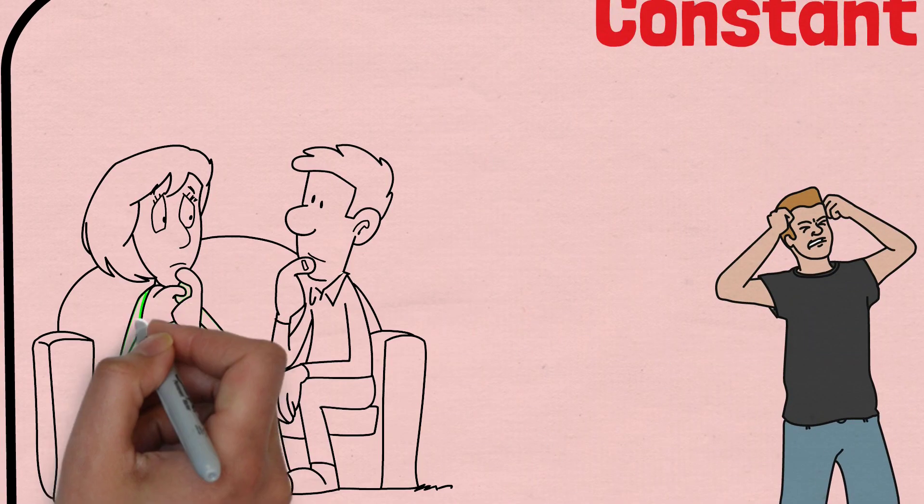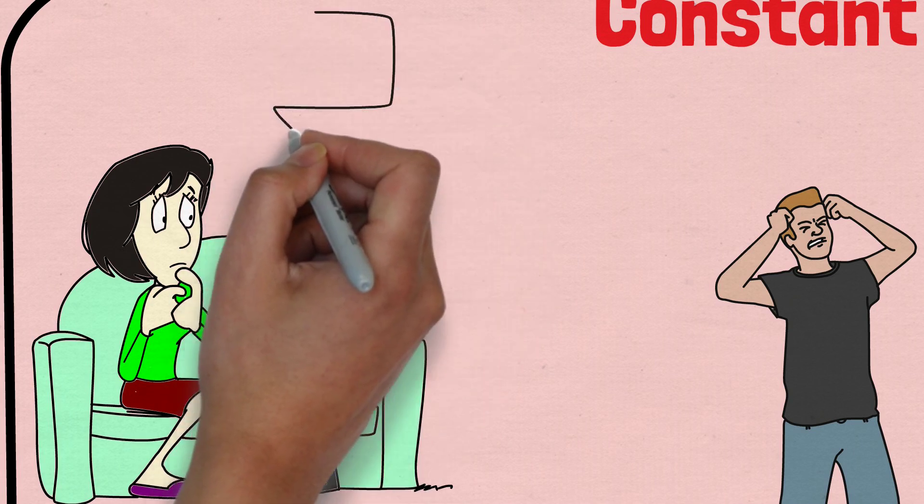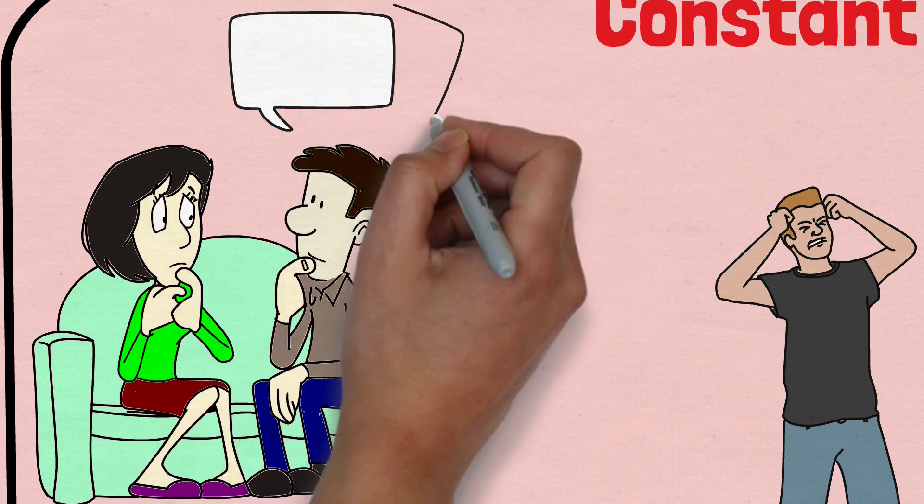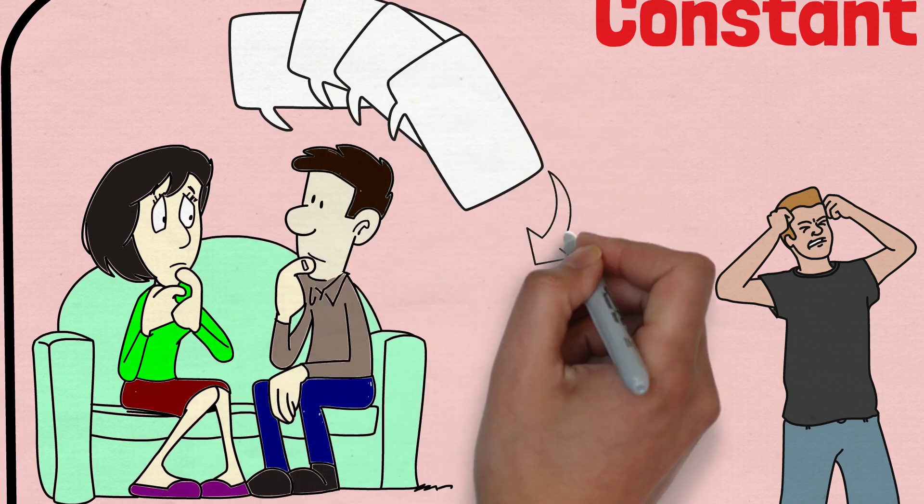We all have areas where we can improve on, and it's natural for our loved ones to point them out to us. However, when criticism becomes constant and never-ending, it's a clear sign of emotional abuse.